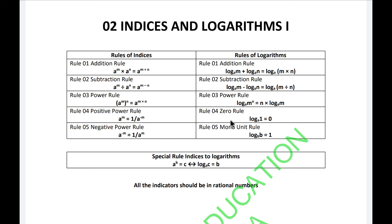There are two special rules not mentioned in most textbooks. The zero rule states: log base a of 1, for any base a, always equals zero. The mono unit rule — where 'mono' and 'unit' both mean one — states that when the base and the numerical value are the same, the result is always one. For example, log base 10 of 10 equals one.